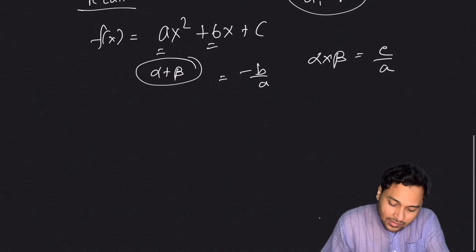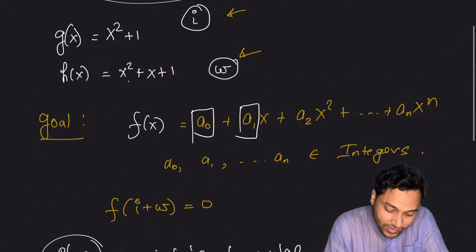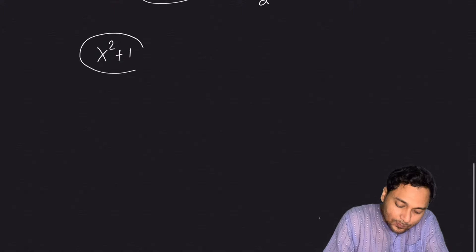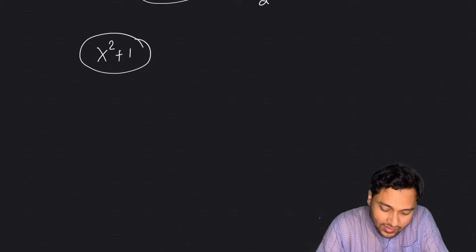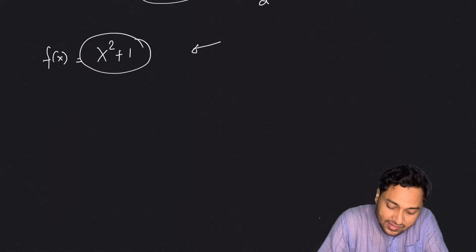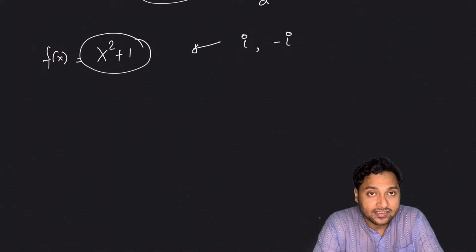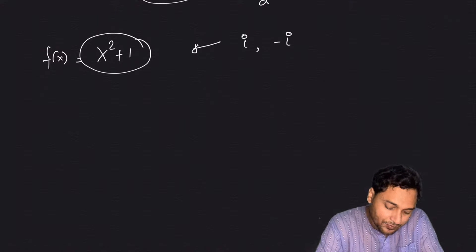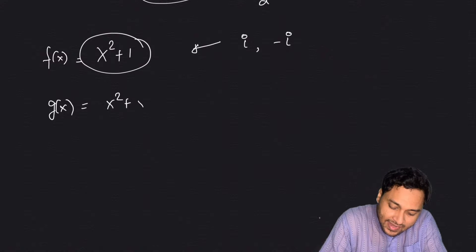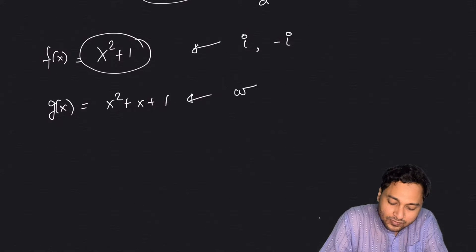So what are the roots of these two equations? f(x) = x² + 1 has two roots: i and −i. If you plug in i you get zero, and −i also gives zero. And g(x) = x² + x + 1 has roots omega and omega².